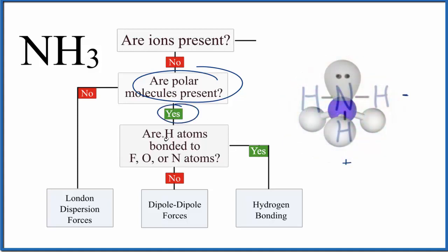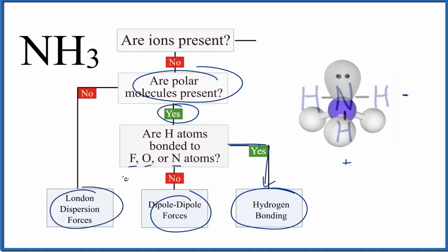And then the next question: are the hydrogen atoms bonded to fluorine, oxygen, or nitrogen? We have our nitrogen right here. So we have hydrogen bonding for NH3. We also have dipole-dipole and London dispersion forces — dipole-dipole because we have a polar molecule, and all molecules exhibit London dispersion forces. The primary intermolecular force for NH3 is hydrogen bonding, as a result of it being a polar molecule and having the hydrogens bonded to that central nitrogen.